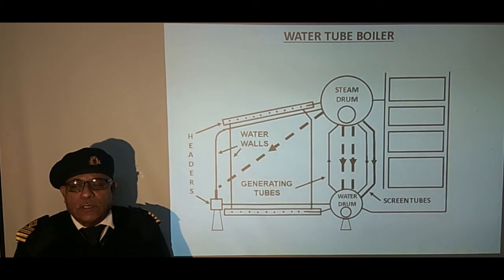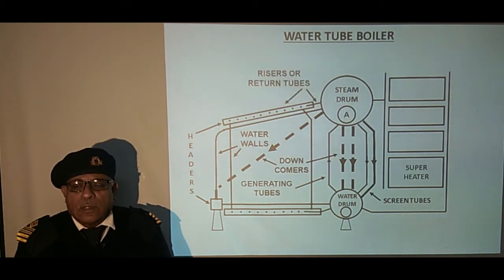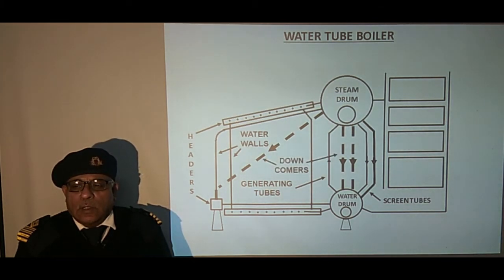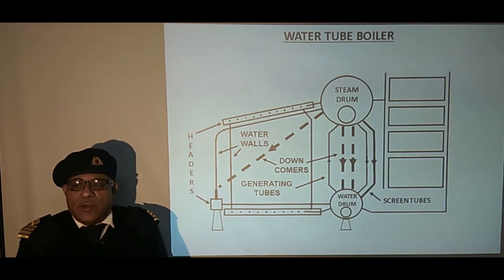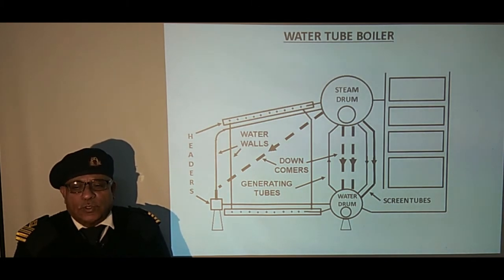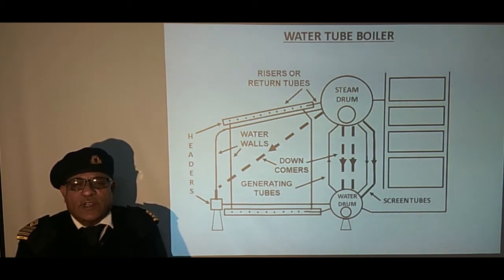The next component is downcomers. Downcomers are large-diameter, un-heated tubes placed outside the gas stream, which act as feeders to the water drum and headers. The next component is risers or return tubes. Risers or return tubes return the steam and water emulsion from the top water wall header to the steam drum.